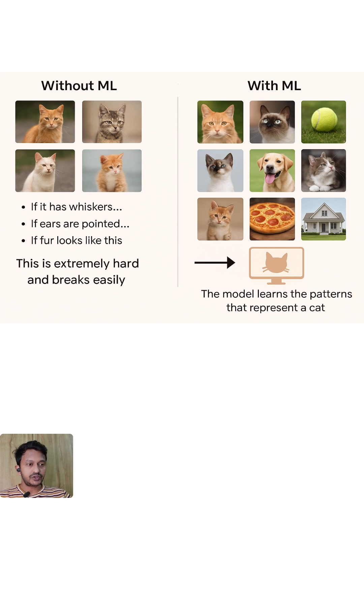Whereas with machine learning, we show the system or the machines thousands of cat images and non-cat images. The model learns the patterns that represent a cat. And then at the end, if you show the machine the cat image and if you ask, hey, tell me, is this a cat image? And it will easily recognize and tell that, yes, it's a cat image.